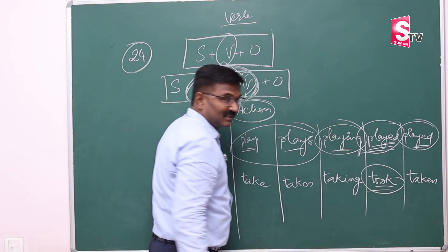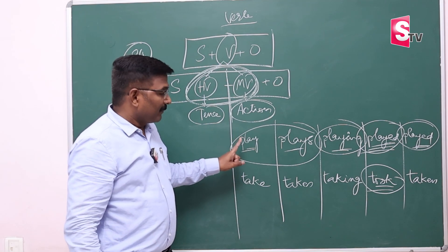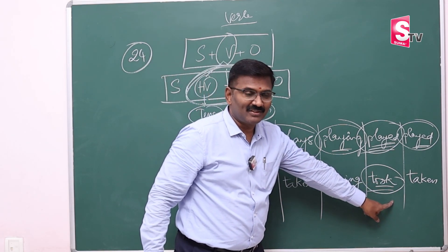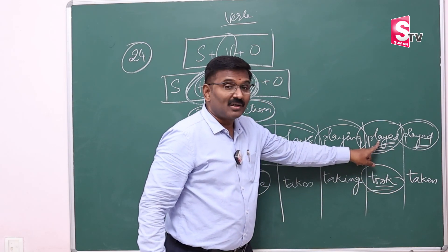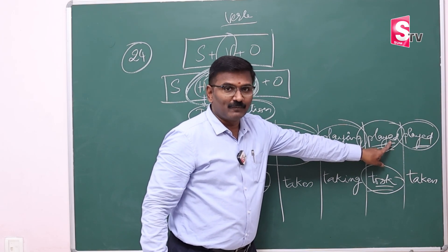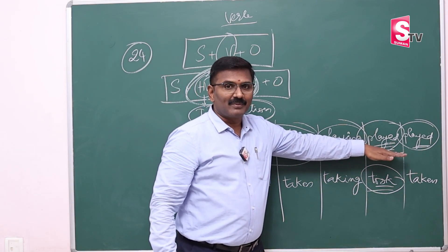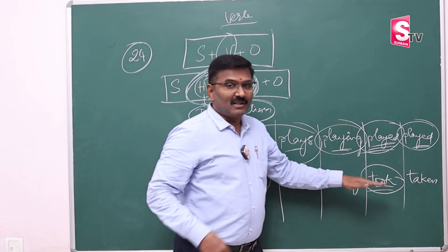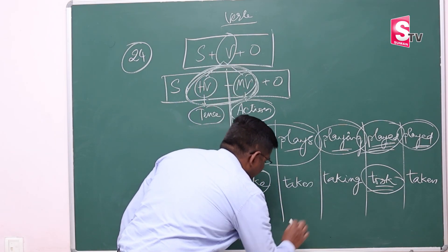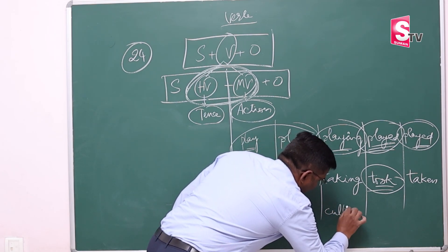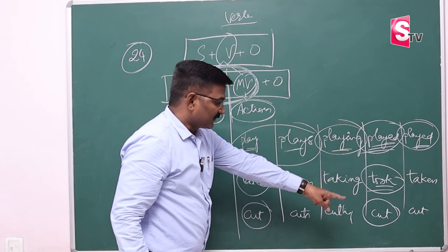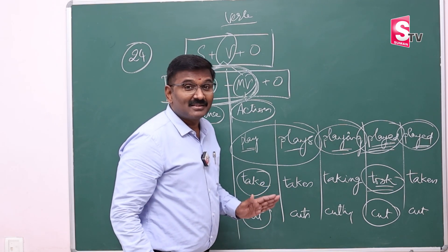You might ask: 'play' has 'ed' in its past form, but 'take' does not — why? Good question. 'Play' is a verb whose past form ends with 'ed' — this is called a regular verb or weak verb. 'Take' is a verb whose past form does not end with 'ed' — this is called an irregular verb. And then there is 'cut': cuts, cutting, cut, cut — the past form is the same as the present form. This is called an unchangeable verb.